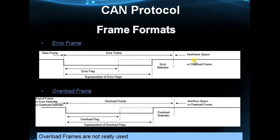The error frame is followed by a delimiter — 8 recessive bits. Each node sends 6 consecutive dominant bits followed by 8 recessive bits, forming the active error frame. For the passive error frame, nodes which are more corrupt will send it. Based on the error count, nodes will be classified as sending either an active or passive error frame, which will be discussed further.